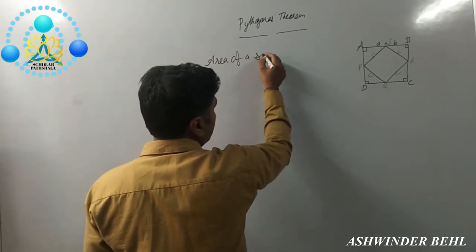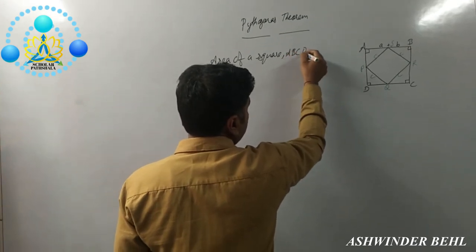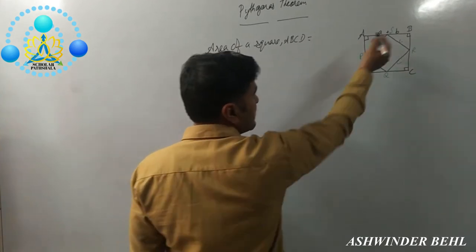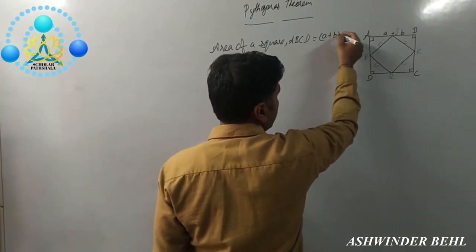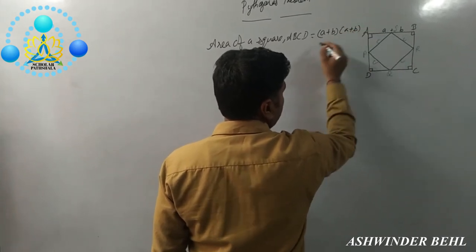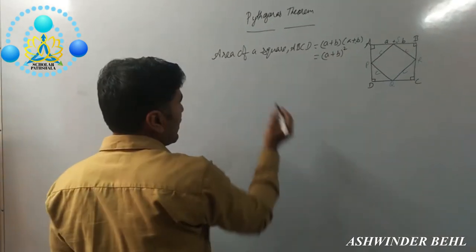Now, area of square ABCD. We know very well that is side into side. So side is A plus B. What do you get here? A plus B times A plus B, that is A plus B the whole square.